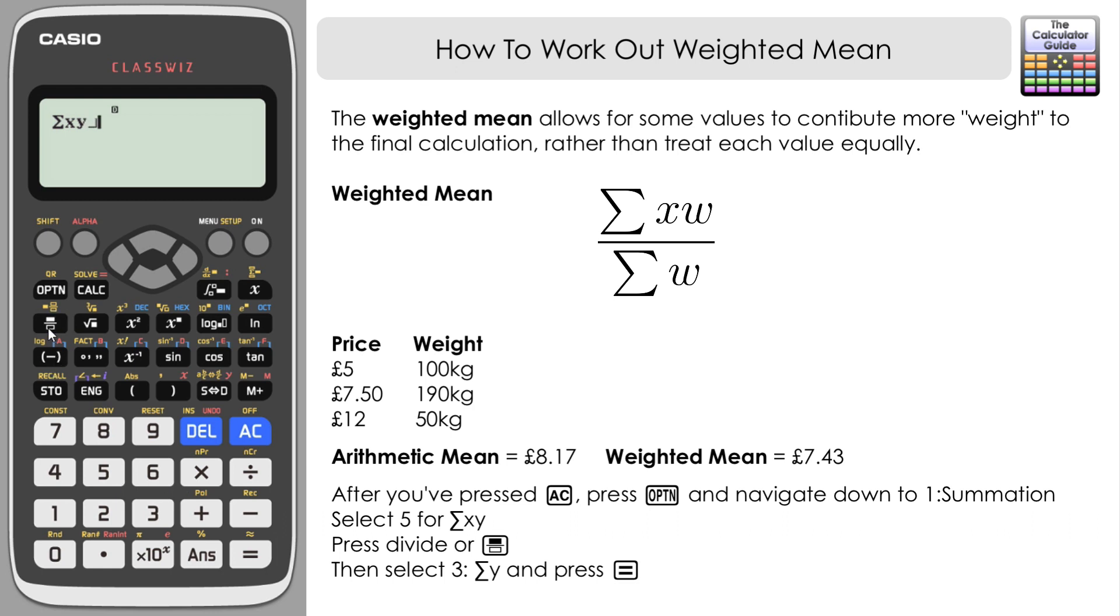Then divided by a fraction button. Here you can see that we're automatically in line mode. Then on the bottom we want the sum of w, well remember that's the sum of y, so we want to choose 3 here and press equals. Again we've got the fraction in the first instance, press SD and here we've got the weighted mean.